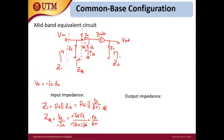For the output impedance Z_out, we set VIN equal to zero, which means Vpi becomes zero, so the current source supplies no current and becomes an open circuit. We only see RC at the output, so Z_out equals RC — no further calculation needed.